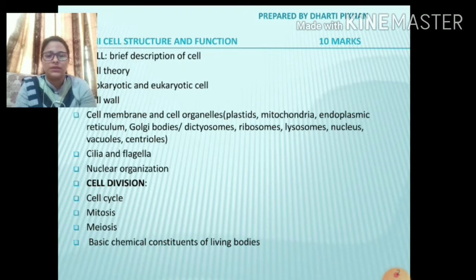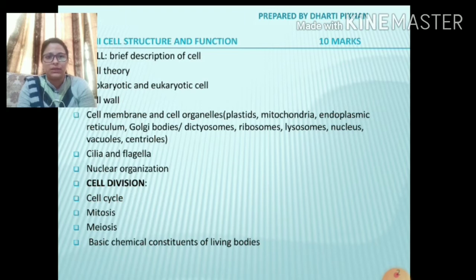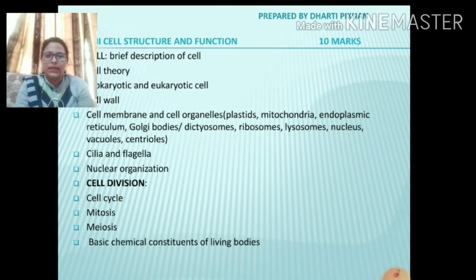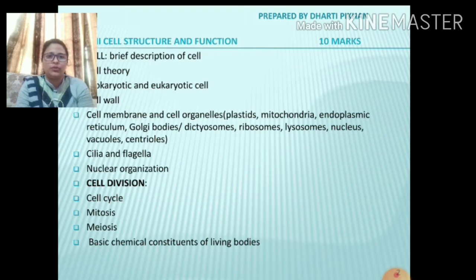Then we have cilia and flagella, which are locomotory organs that help in movement — we have to study their structure, function, who discovered them, and all details. Then next is nuclear organization — inside the cell there is a nucleus containing DNA, chromosomes, and vacuoles, and we have to do a detailed study of that.